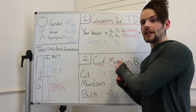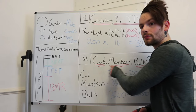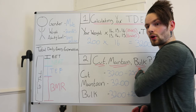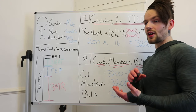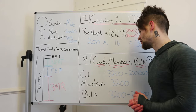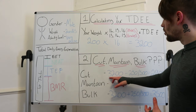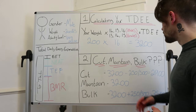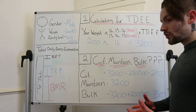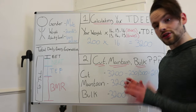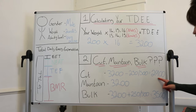Once we've got our TDEE estimation, we need to decide whether we want to lose weight, maintain our current weight, or lean bulk and gain some muscle — because each goal requires a certain adjustment to your daily calorie intake. If you want to cut, lose weight, or shed some body fat, you take your TDEE — in this case 3,200 — and subtract 250 to 500 calories. We'll go with 300 calories as a midpoint, leaving us with a new total daily energy expenditure of 2,900.